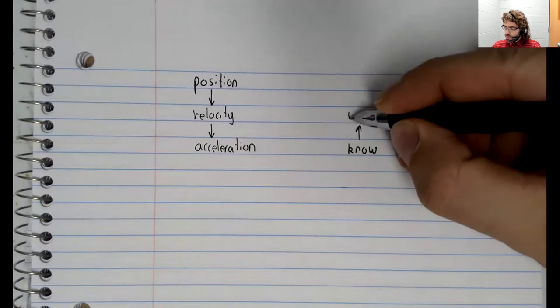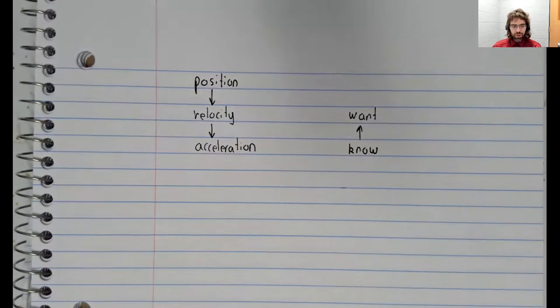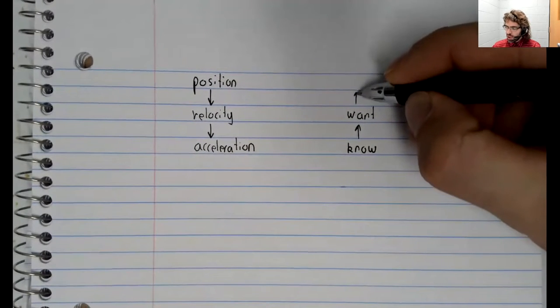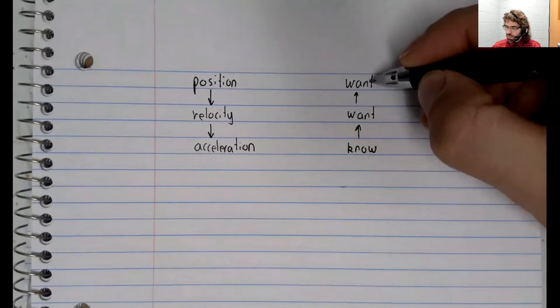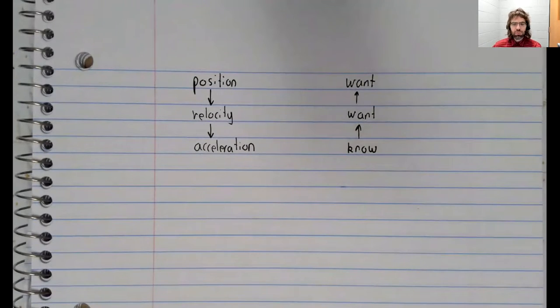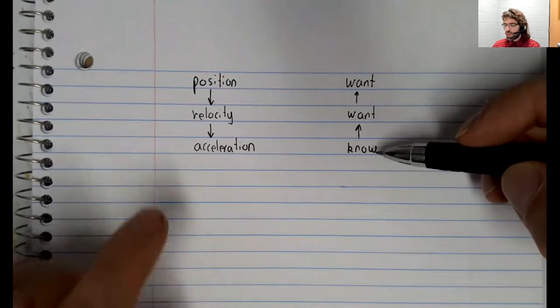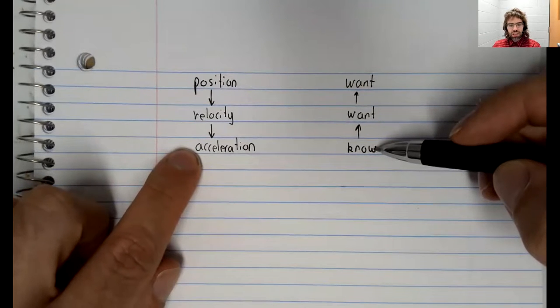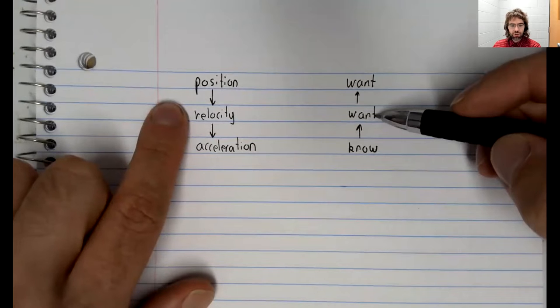And you want information about the velocity, or maybe you want information about the position. So you want to take information about this derivative and use it to get information about this antiderivative.